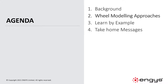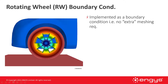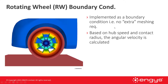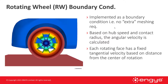Let me talk about wheel modeling approaches. In terms of the rotating wheel boundary condition, it's implemented as a boundary condition, which means there are no extra meshing requirements. This is really nice for the user because we mainly just concern ourselves with local refinements or volume refinements on the wheel itself and don't need to consider adding extra zones or worrying about a sliding mesh interface. It's typically very stable. The boundary condition is based on hub speed and contact radius, and the angular velocity is calculated for the user. Each rotating face has a fixed tangential velocity based on distance from the center of rotation, but one drawback is there's no normal component of velocity on the face.